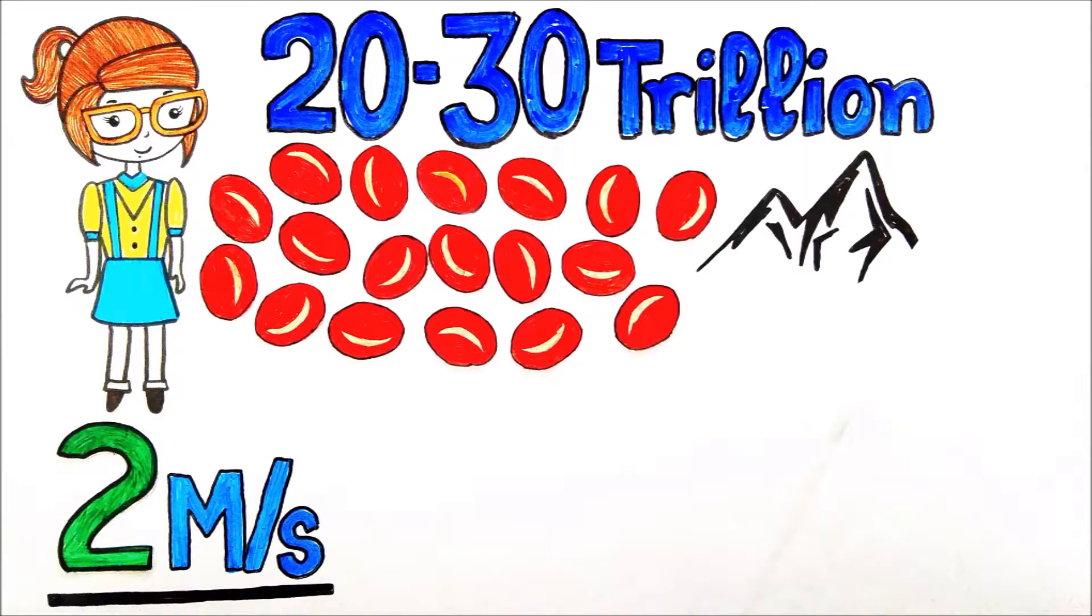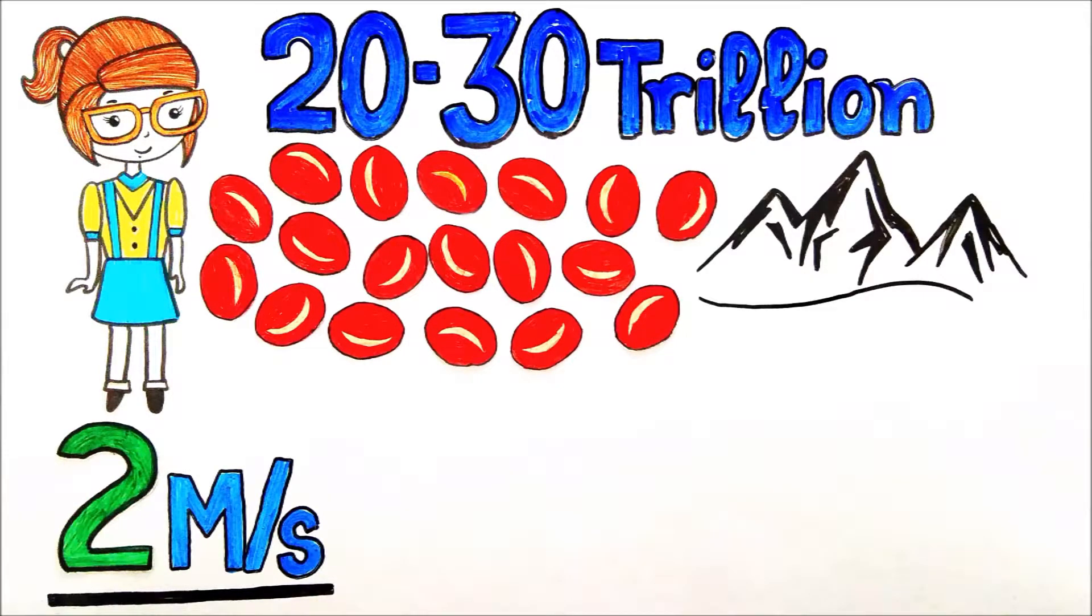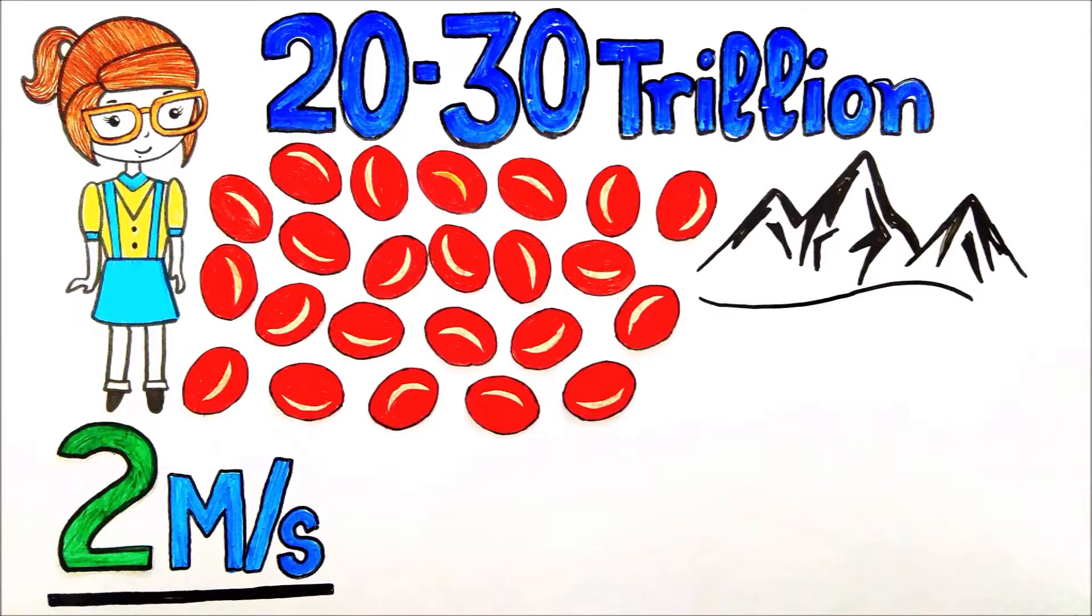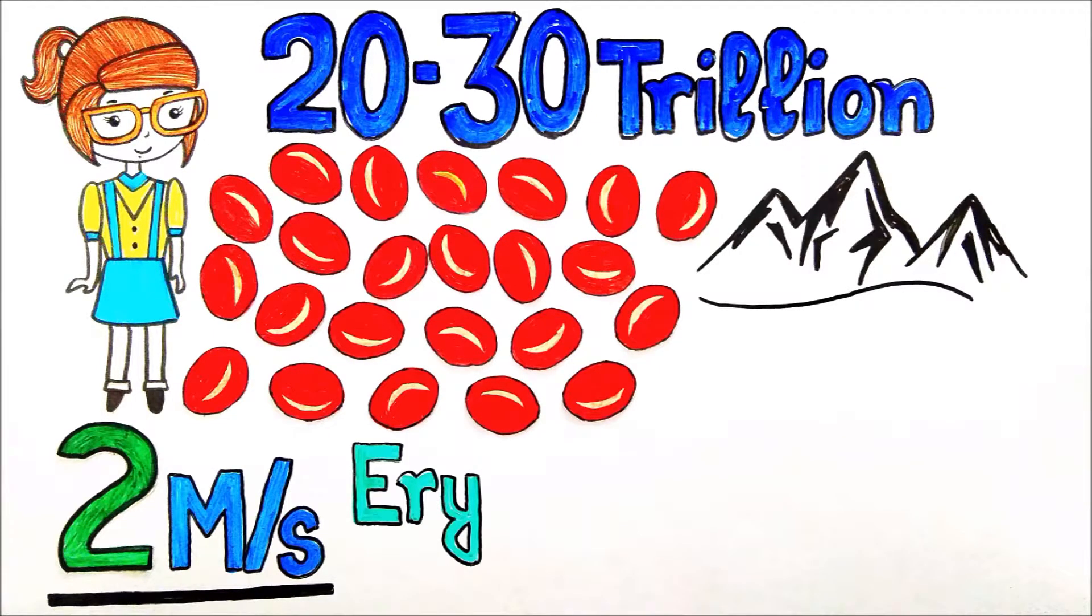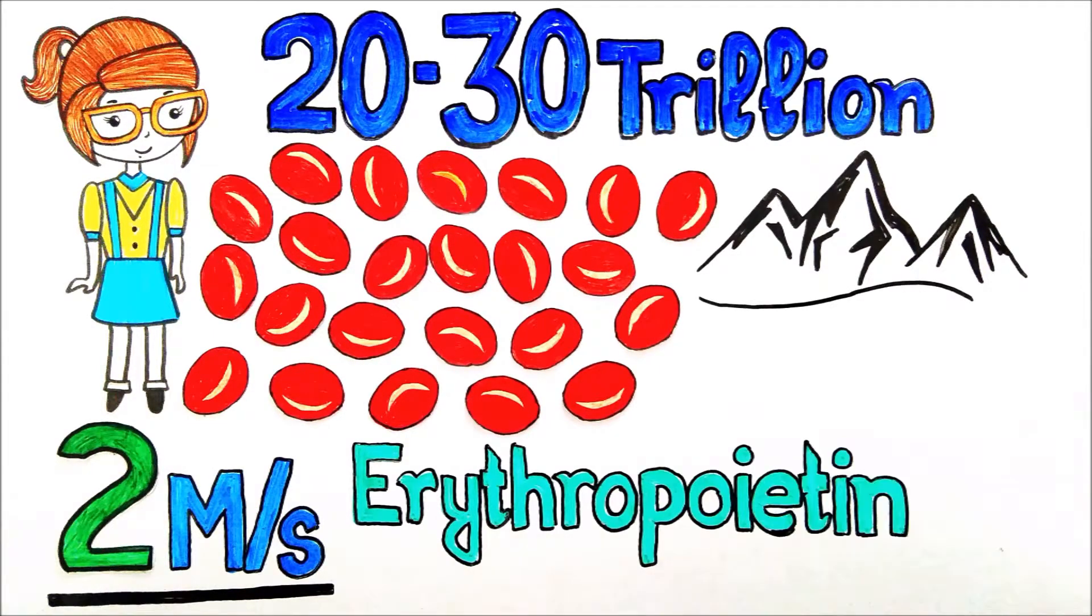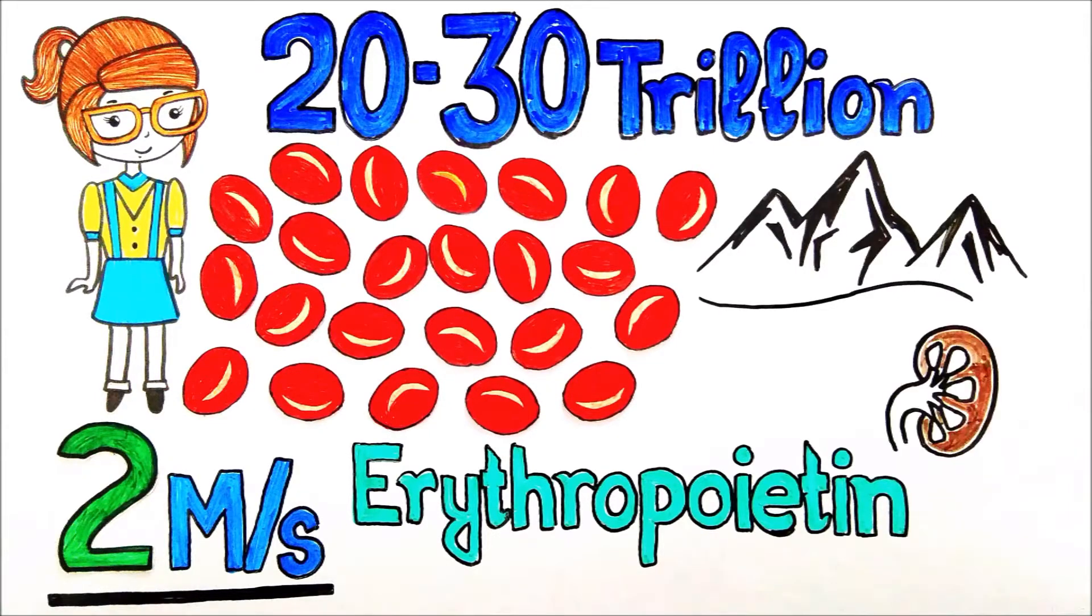In certain conditions, for example, when you go up in mountains, your blood production increases significantly. And this production rate can be further increased by hormone erythropoietin which is produced by your kidneys.